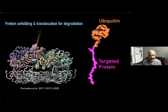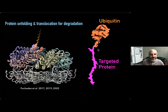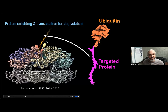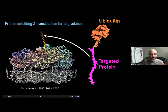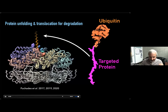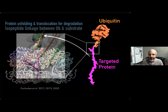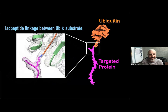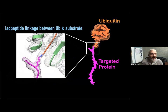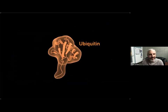We spent a lot of time in the group working on how proteins, once engaged by ATPase motors, are unfolded and translocated towards a proteolytic core for degradation. We've always been interested in this isopeptide linkage between ubiquitinated substrates and the peptide of the substrate. And this is where we enter into the targeted protein degradation field.